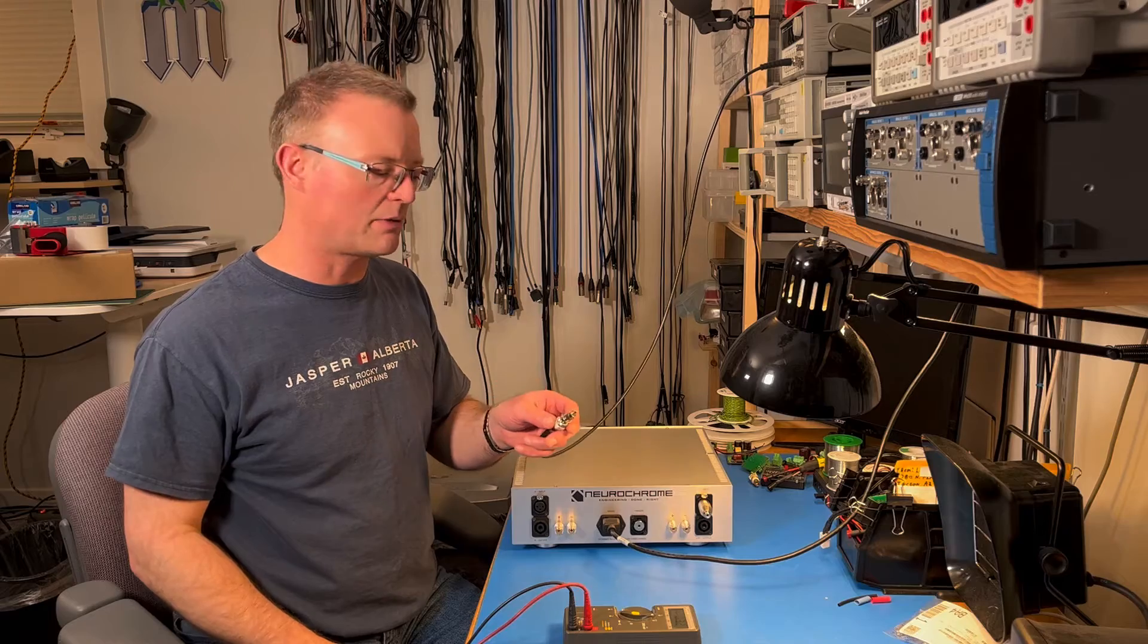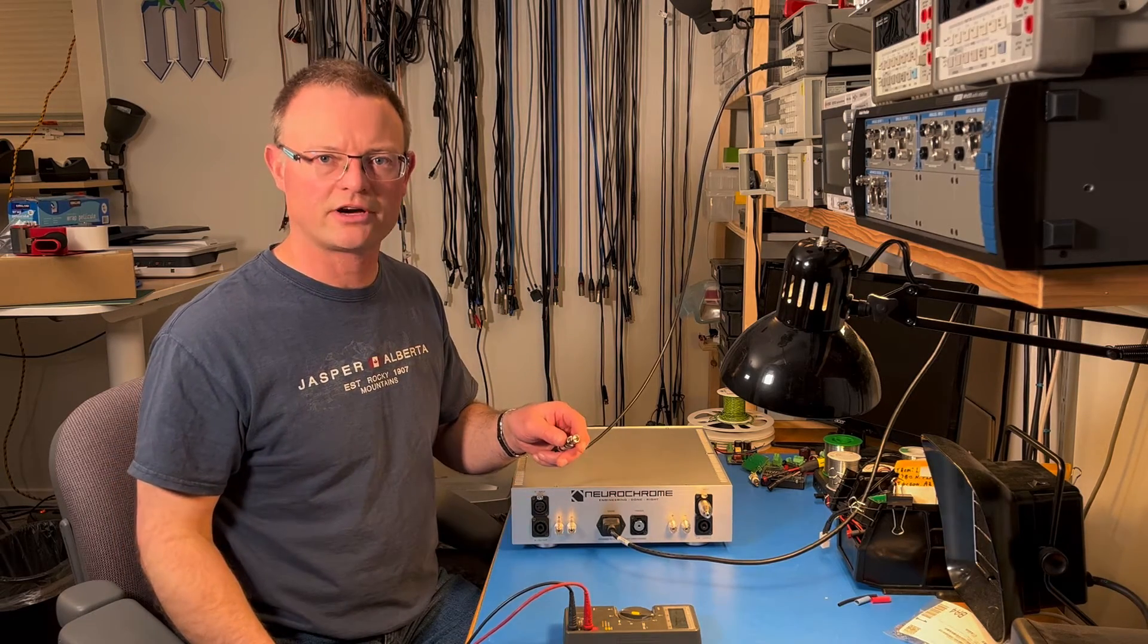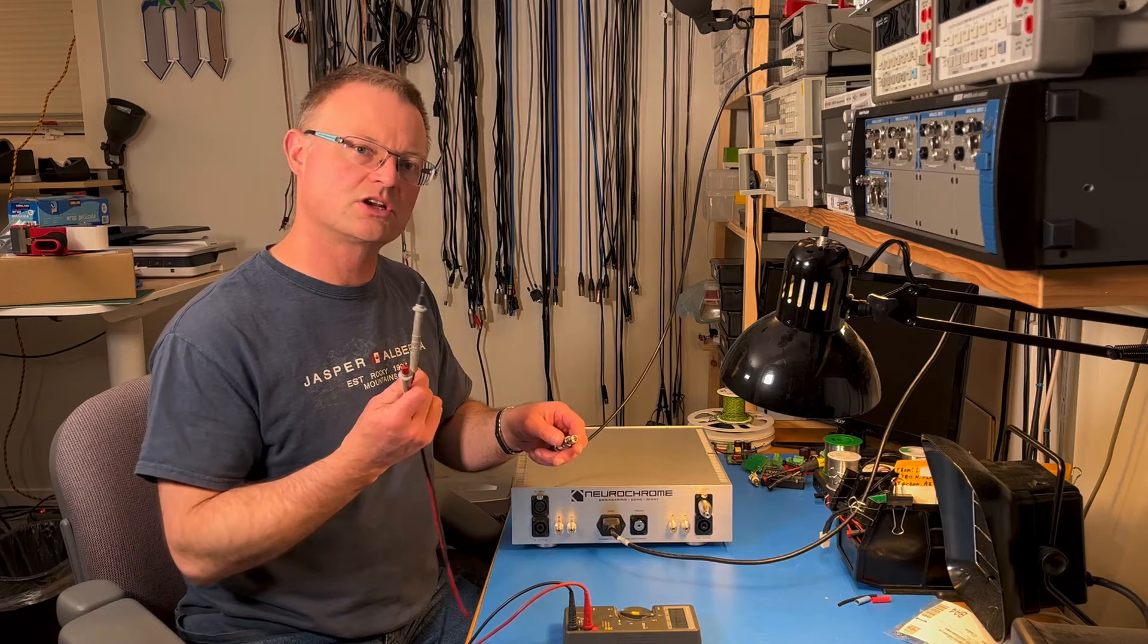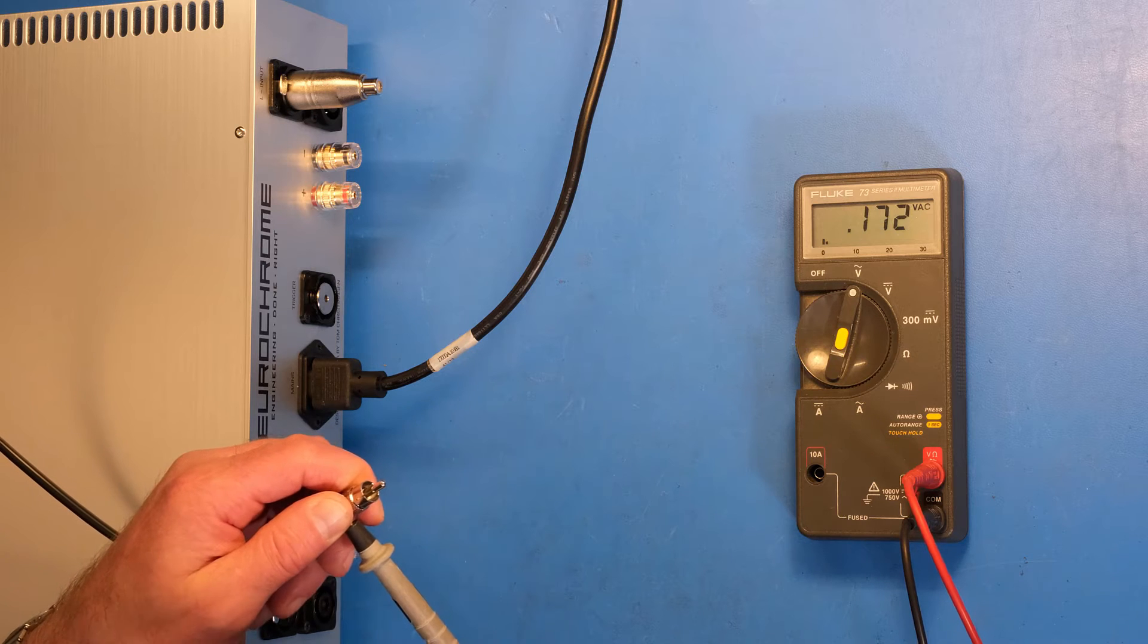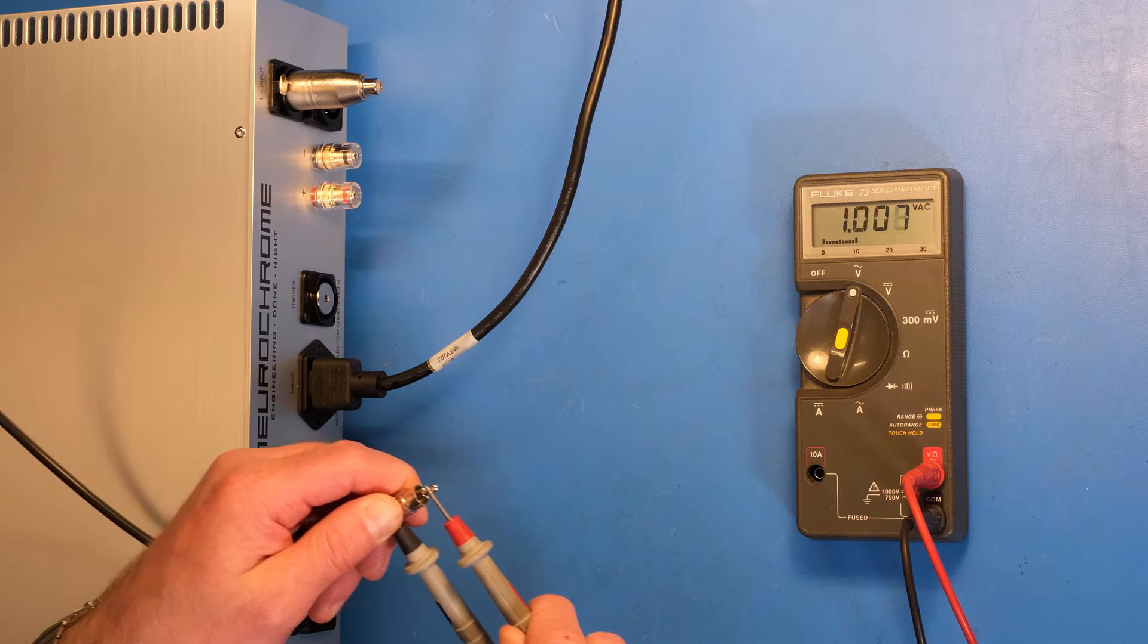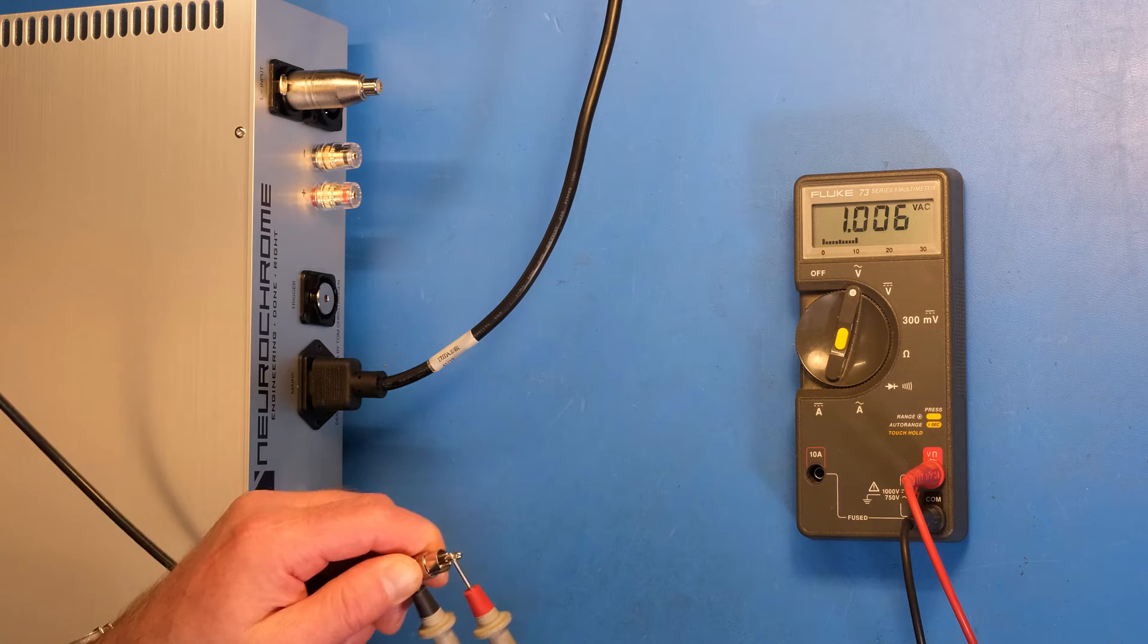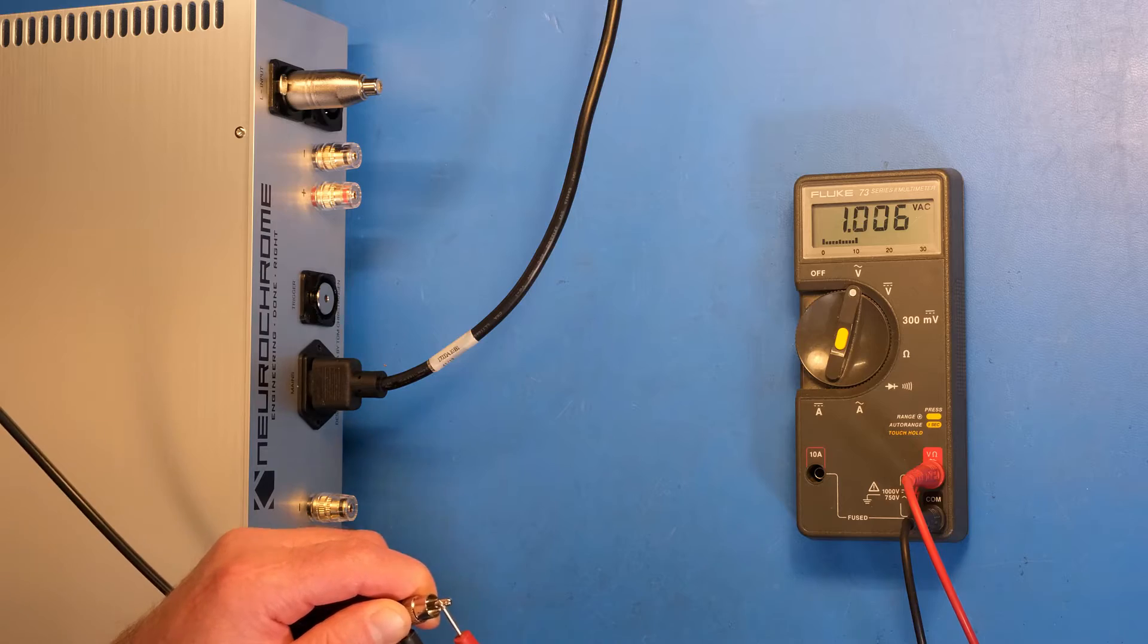And now let's measure the output voltage of the signal generator because that will be the input voltage to the amplifier. I'll do that by touching the negative probe of the meter to the RCA shell and then touching the positive probe of the meter to the RCA center connector. The meter is set to measure AC voltage. And it reads 1.006 volts AC.